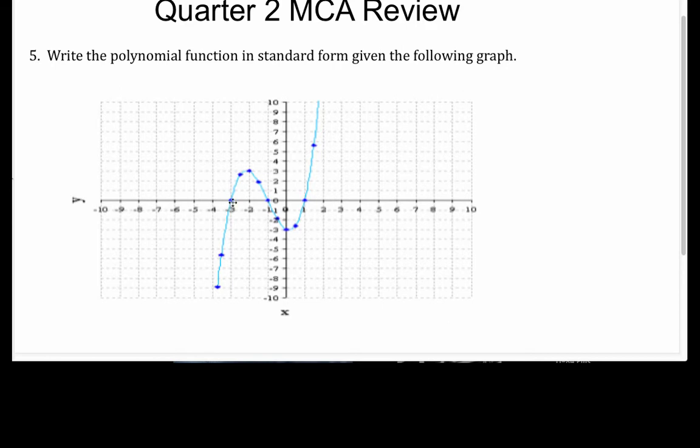So the first thing I want to find is I've got a zero here, a zero here, and a zero here, otherwise known as roots as well. So I'm going to need to figure out what the zeros of the function are based on the graph that we have. We have many points, but the ones that we're concerned about really are these here.